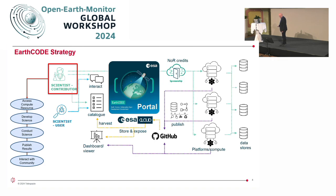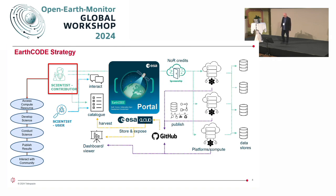Regarding EarthCode strategy, we can consider the use cases by looking at two main roles. One is the scientist contributor. EarthCode will provide a number of use cases to support the scientist contributor. One will be access to compute resources, which will allow scientists to develop and then execute their experiments in a location close to the data with sufficient compute resource. Once the experiment has been completed, EarthCode will provide the facility to publish experiments and then interact with the community.